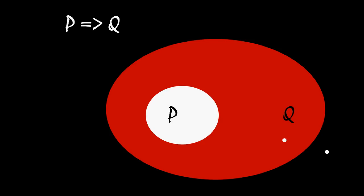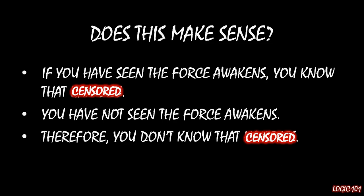Let's wrap things up with a verbal version of this argument. Take this: if you have seen The Force Awakens, you know that... You have not seen The Force Awakens. Therefore, you don't know that... Notice that this fits the version of denying the antecedent that we saw earlier. We have the first premise as an implication, the second premise as the negation of the antecedent, and the conclusion as the negation of the consequent.